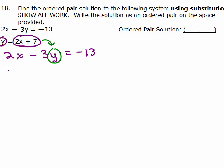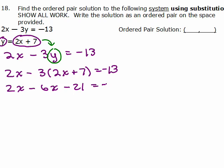So we have 2X minus 3 and you better put that in parentheses, 2X plus 7 and now we have a linear equation to solve. So, distribute your negative 3, not just 3, so it's negative 6X minus 21 is negative 13.